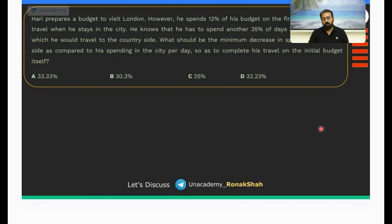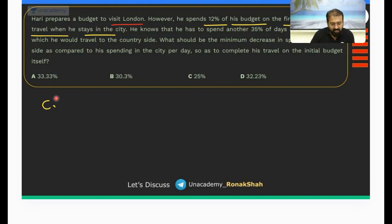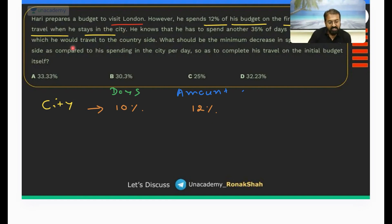Let's crack it. Harry prepares a budget to visit London. However, he spends 12% of his budget on the first 10 days of his travel when he stays in the city. Let me write down days and amount spent. So in 10 days he spent 12% of the budget amount.